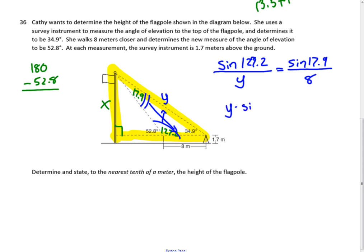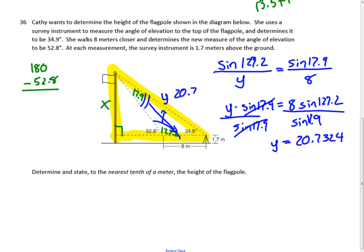So if we do our cross product property, times the sine of 127.2, and then we divide this by the sine of 17.9, and so just put this whole thing in your calculator. And so this y value is 20.7324.